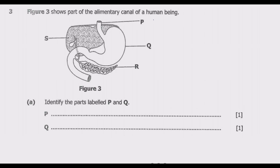Question 3: Figure 3 shows part of the alimentary canal of a human being. Question A asks you to identify the parts labeled P and Q. The best thing to do is to label all the parts first — once we label all the parts, answering the follow-up questions becomes much easier. If you look at the figure carefully, you notice that P is a food pipe.